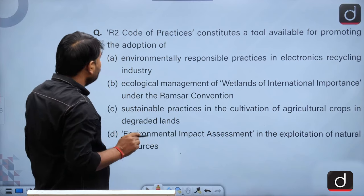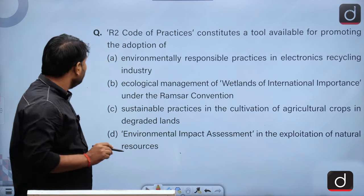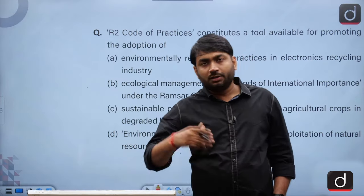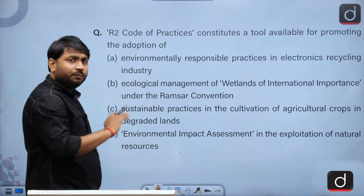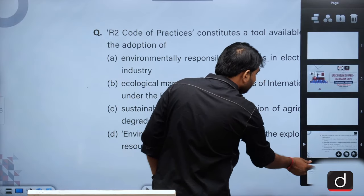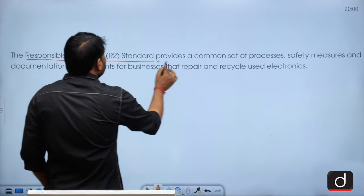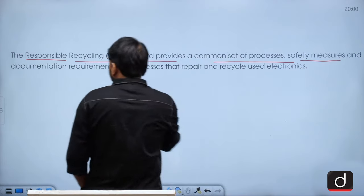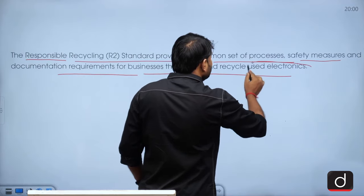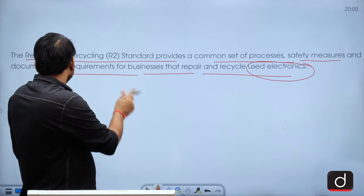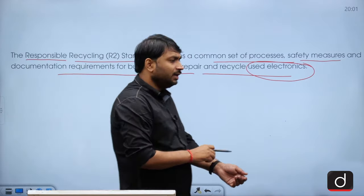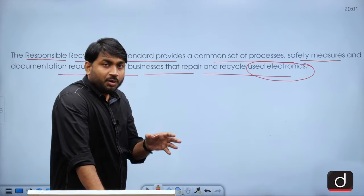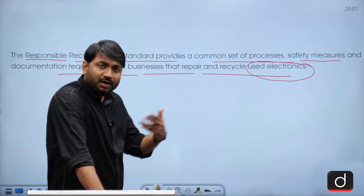Question number one: R2 Code of Practices constitutes a tool available for promoting the adoption of what? If you have read e-waste rules and the concept of Extended Producer Responsibility (EPR) regimes, you must have come across this R2 Code of Practices. R2 stands for Responsible Recycling Standard — it provides a common set of process, safety measures, and documentation requirements for businesses that repair and recycle used electronics. Option A will be the correct option.